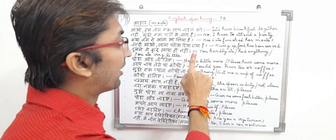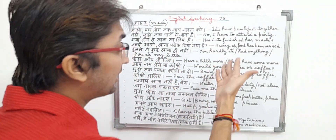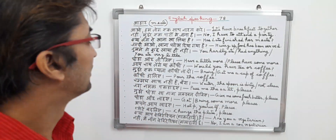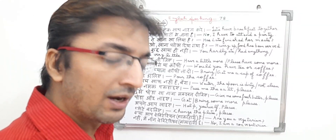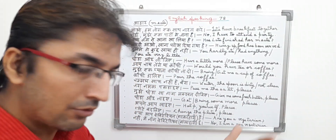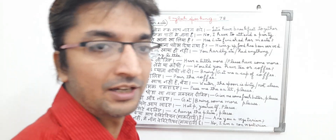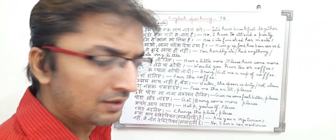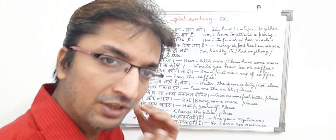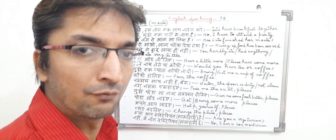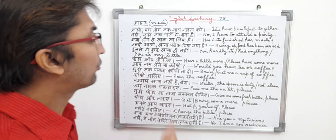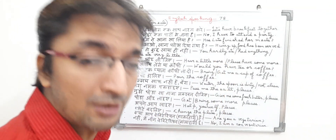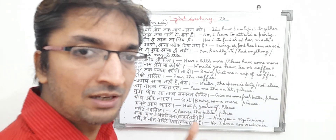Jaldi aav, khana paroz dia gaya hai. In English, it means 'Hurry up, food has been served.' The sentence basically means the person is inviting everyone in the family to come together and eat the food. As we normally see at home — when our mother cooks food and it is ready, she immediately calls everyone to eat. So in English, it means 'Hurry up, food has been served.' It is a meal type sentence.